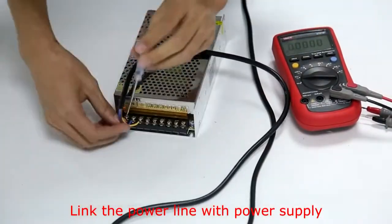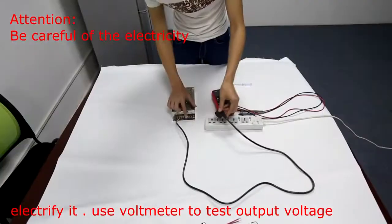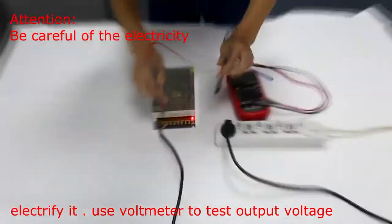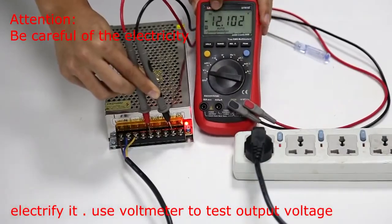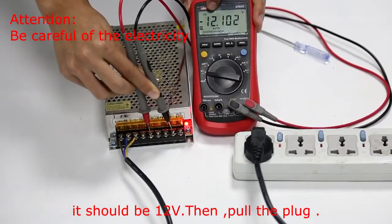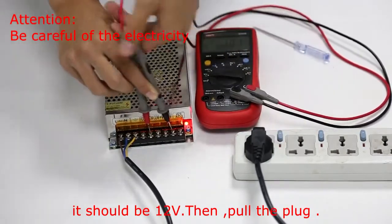Link the power line with the power supply. Electrify it. Use a voltmeter to test the output voltage. It should be 12V. Then pull the plug.